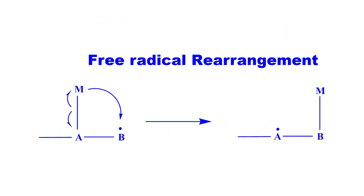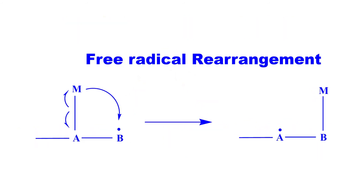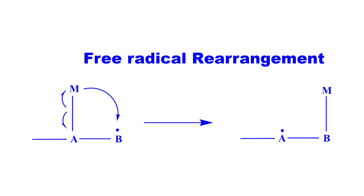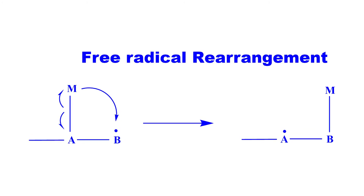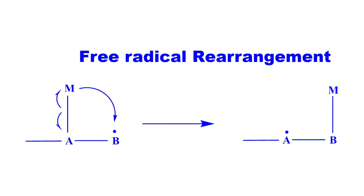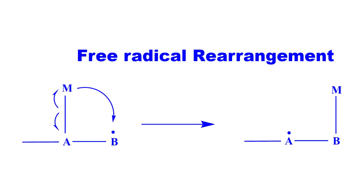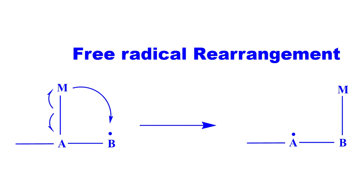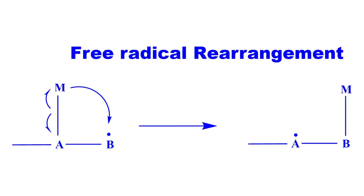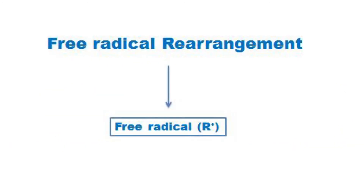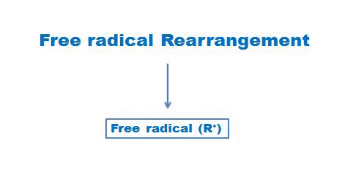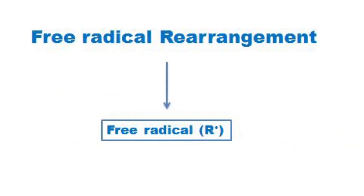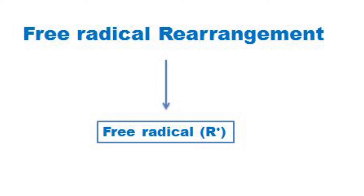The next classification is the free radical rearrangement. Free radical rearrangements are comparatively rare. In this rearrangement, the migrating group migrates with just one electron to a free radical center.